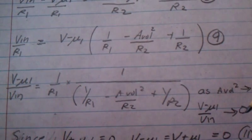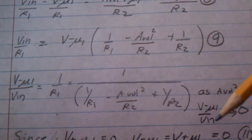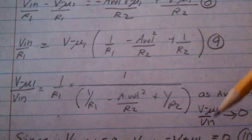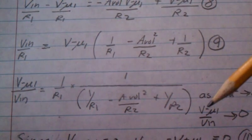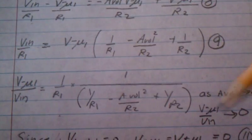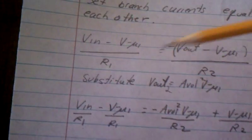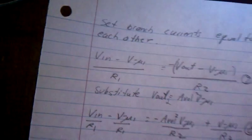So V_in is nonzero, it's our input, and V_minus U1 that means V_minus at U1 has to be zero. So the node voltage here has to be zero.